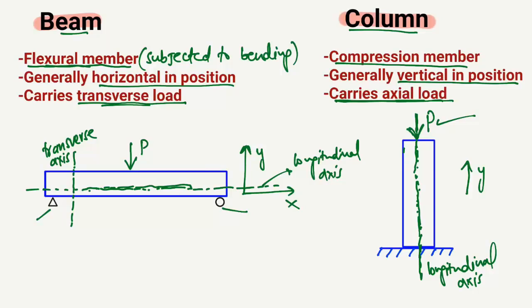These are the three main differences which clearly differentiate the beam member from the column. Hope you guys understand, and don't forget to subscribe to our channel for more civil engineering videos. Thank you for watching.